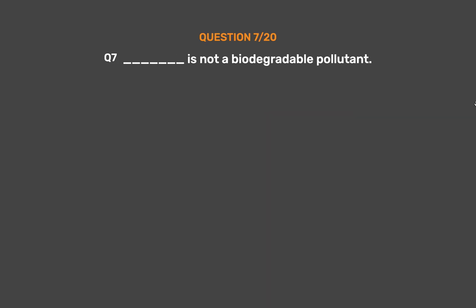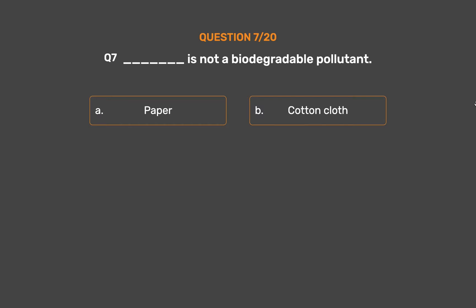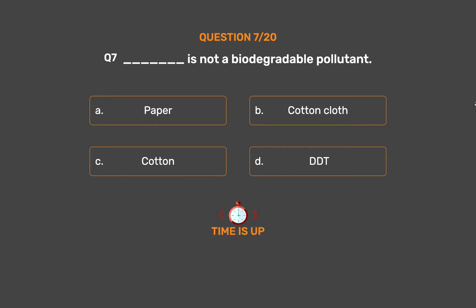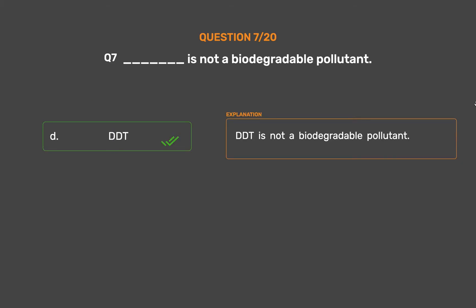Question number 7: Which of the following is not a biodegradable pollutant? Option A: Paper, Option B: Cotton cloth, Option C: Cotton, Option D: DDT. The correct answer is Option D, DDT. DDT is not a biodegradable pollutant.